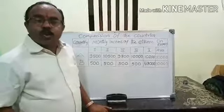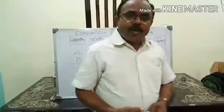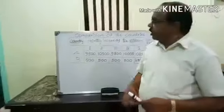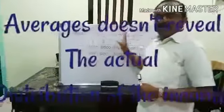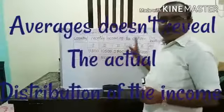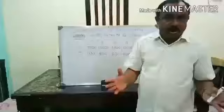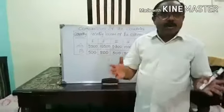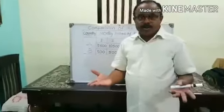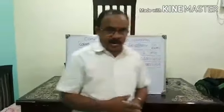By the end of today's lesson, you have understood two key points: Number one, averages don't reveal the actual distribution of income. Number two, the World Bank classified the countries of the world into three categories. Tomorrow we will meet again in another class.